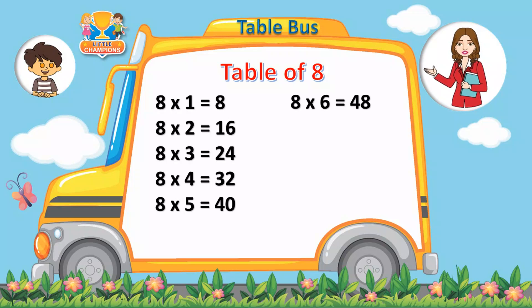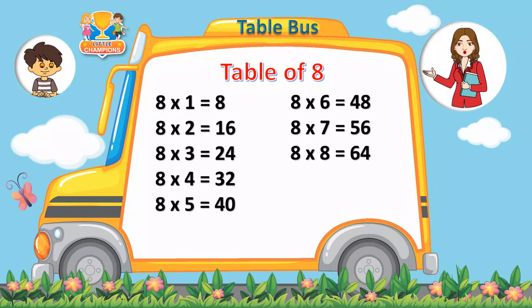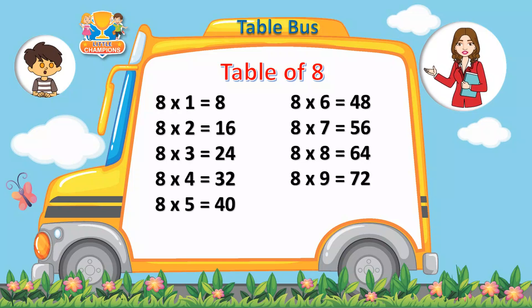8 sixes are 48. 8 sixes are 48. 8 sevens are 56. 8 sevens are 56. 8 eights are 64. 8 nines are 72. 8 tens are 80.